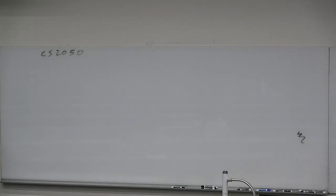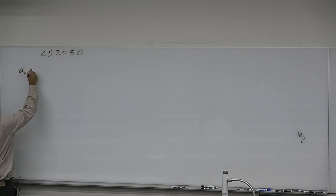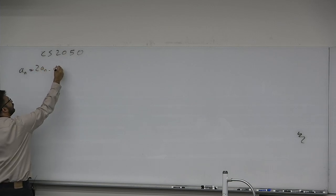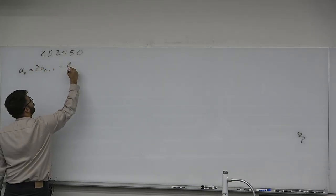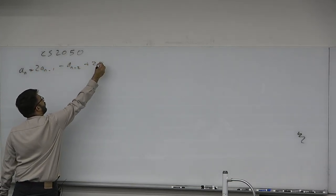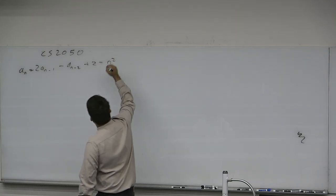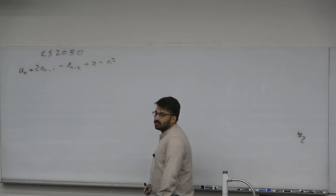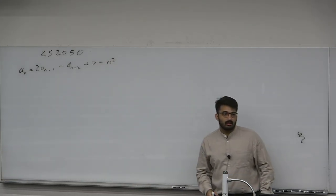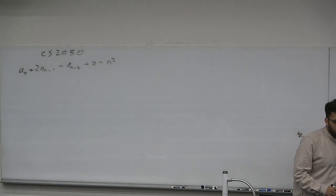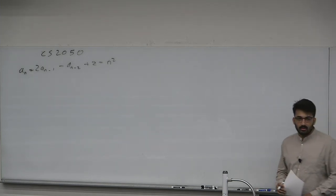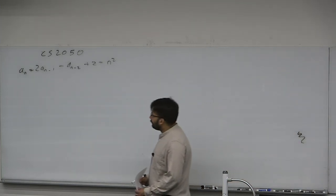We used proof by strong induction last time to prove the closed form of recurrences. You have a sequence of numbers and it turns out you don't need to compute them recursively — something like 2a(n-1) minus a(n-2) plus 2. We said we could just do this with n squared; we don't actually have to compute the 1000th number in the sequence. Just compute it once. That's the benefit of a closed form.